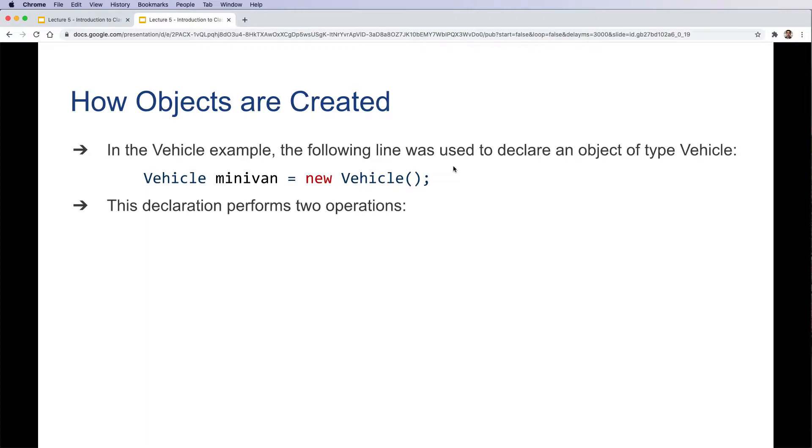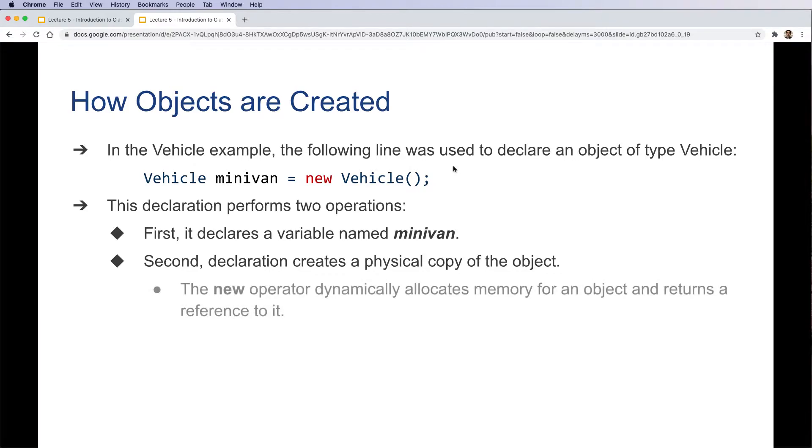This declaration performs two operations. First, it declares a variable named minivan. Second, declaration creates a physical copy of the object. The new operator dynamically allocates memory for an object and returns a reference to it.